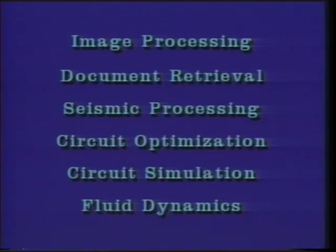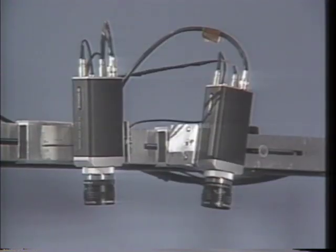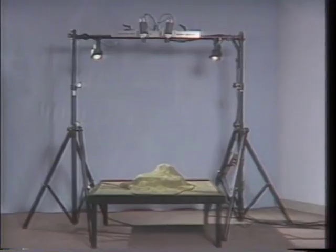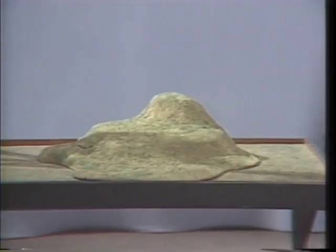The Connection Machine System is ideal for image processing. The analysis of aerial images is one such application. Here, two cameras are pointed down at a model terrain. Because the cameras are at different positions, each sees the scene from a slightly different angle. Elements of the scene that are above ground level jump noticeably between the two views, while elements that are low to the ground appear in the same position in each image. Connection Machine stereo matching algorithms use this parallax phenomenon to compute the contours of the scene.